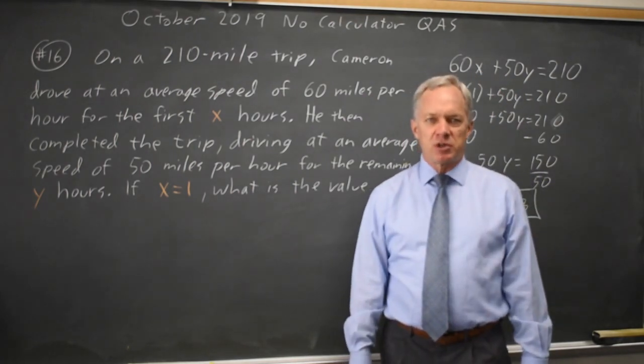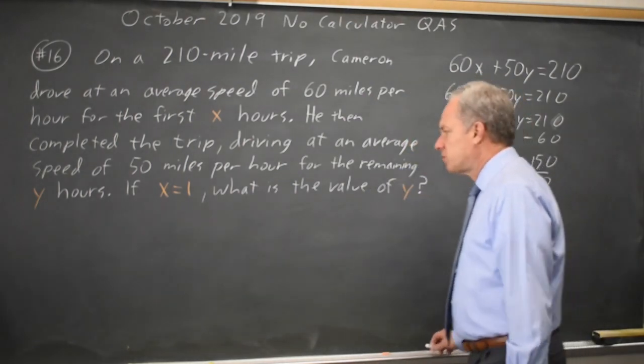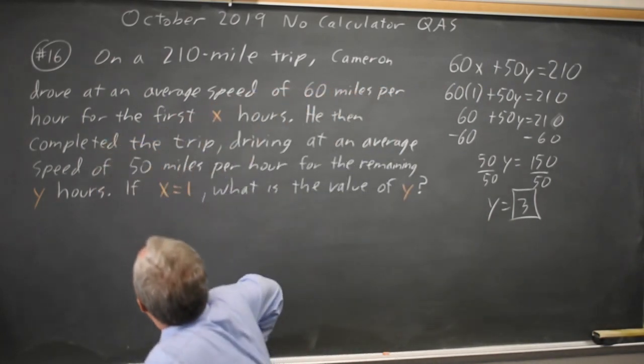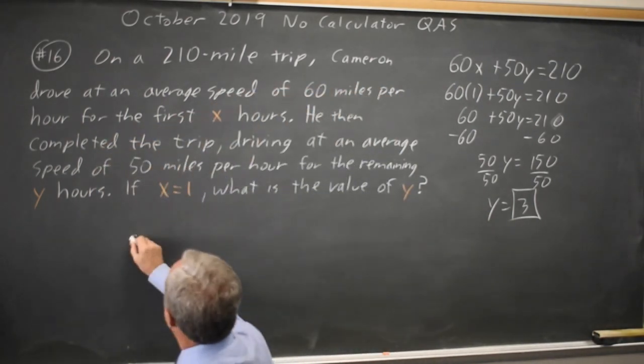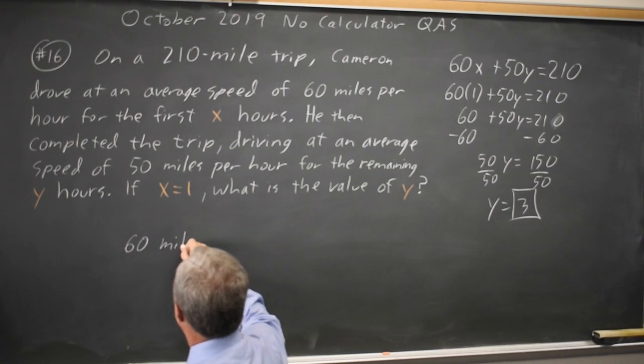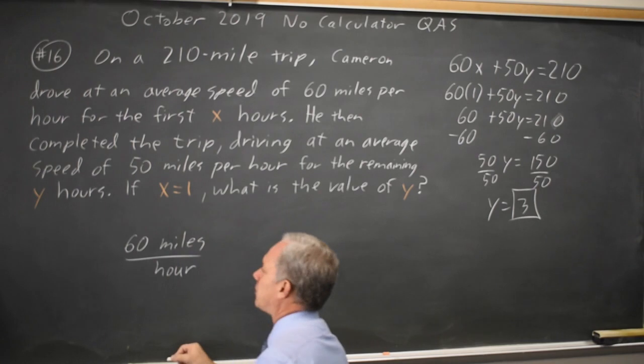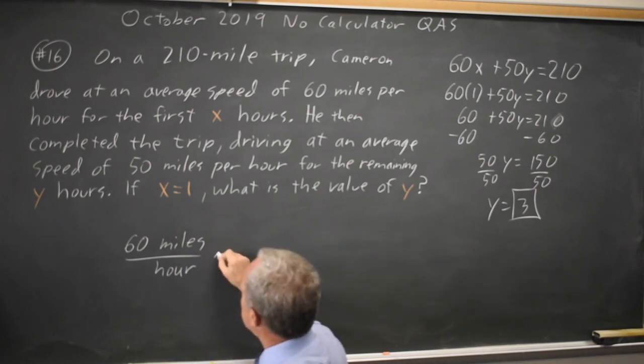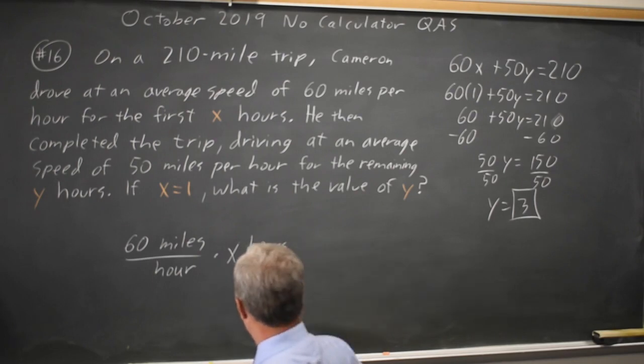College Board often asks rate questions, and it's helpful to remember your conversion of units. 60 miles per hour—per means divide by—times X hours. The hours cancel, leaving you with miles.